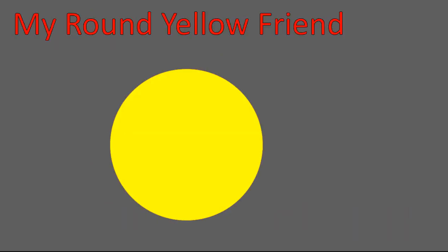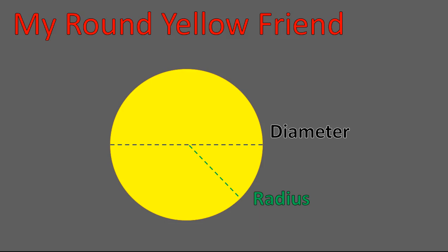I'd like to introduce you to my round yellow friend — this is the circle. With the circle, there are some important parts. We have a diameter and a radius. The diameter is twice as long as the radius; it goes across the entire circle through the center. A radius begins at the center and goes to the outside point on the circle. And the area of the circle is the part shaded in yellow. We're going to use all three of those parts in our lesson today.